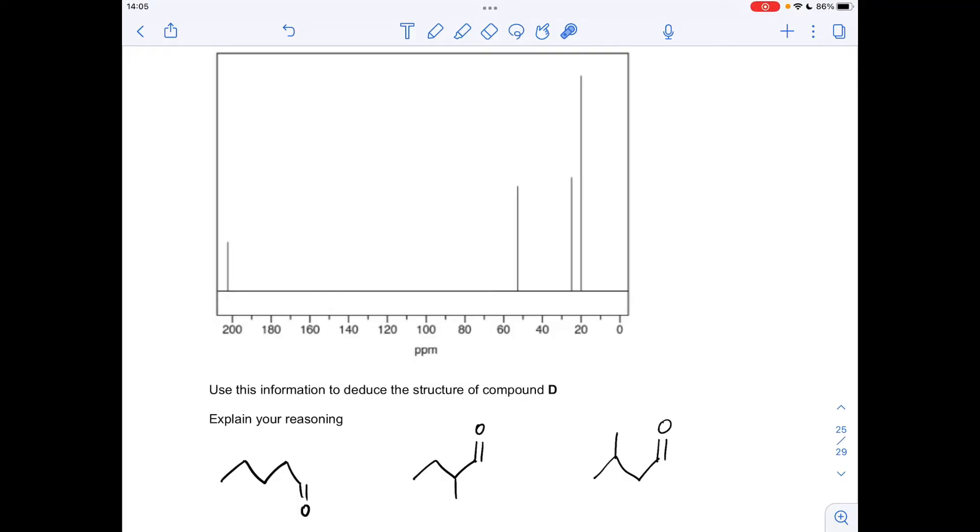it could be pentanal, so there's pentanal there. So if we just look at the structure of that, it's got one, two, three, four, five carbon environments, so they're all different. So this would have five signals, so it's not this one.